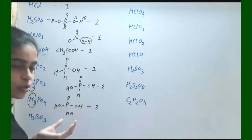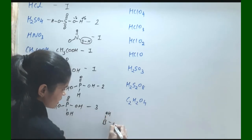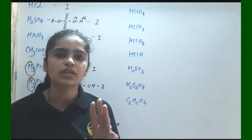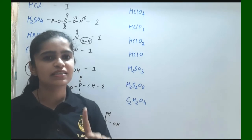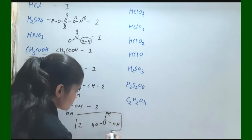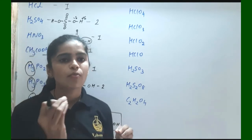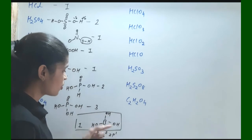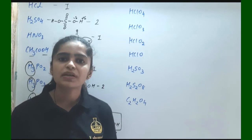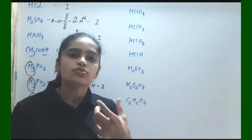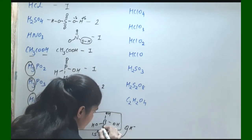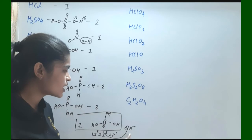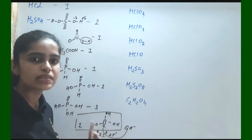Next consider H₃BO₃, which has B with OH, OH, and OH. If your answer is basicity equal to 3, that is wrong. Its basicity is equal to 1. This is an exceptional case. Why? Because boron has a vacant orbital. Boron's electronic configuration is 1s², 2s², 2p¹ — only 6 electrons present, so one orbital is vacant. Boron requires 2 more electrons to complete its octet. When one OH⁻ occupies this vacant space and completes the octet rule, no more OH⁻ are needed from a base. So its basicity is equal to 1, not 3.